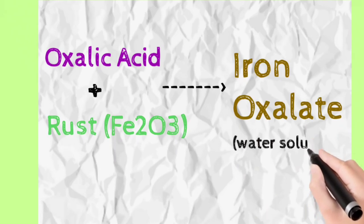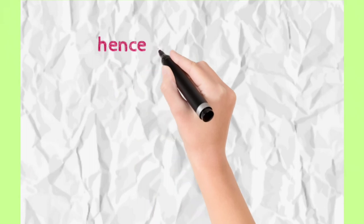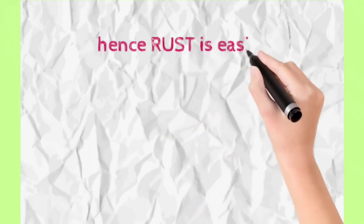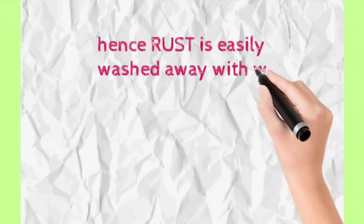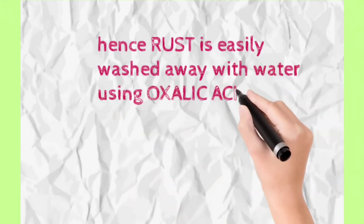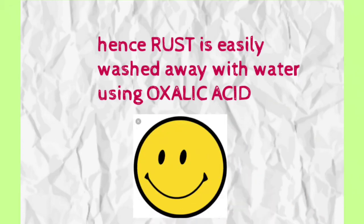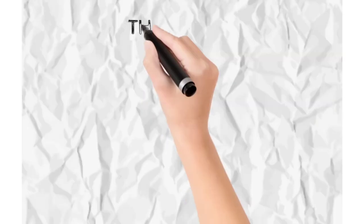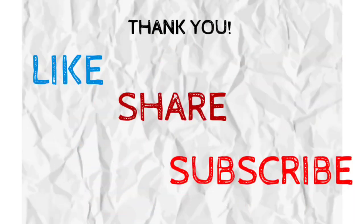This is how rust is removed using oxalic acid. Hence, rust can be washed away with the help of oxalic acid. Why? Because oxalic acid combines with rust and creates new compounds that are water soluble. Share and subscribe if you found this knowledgeable.